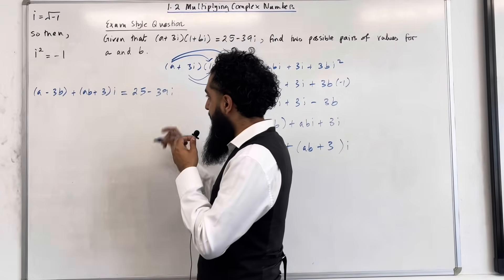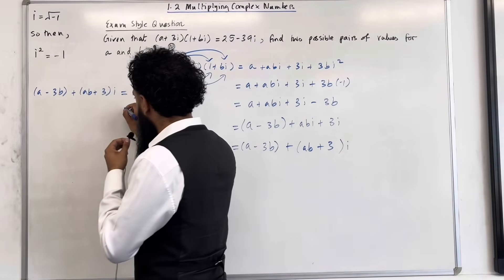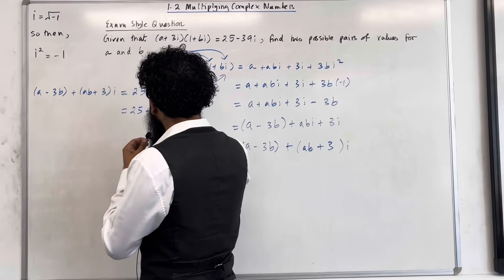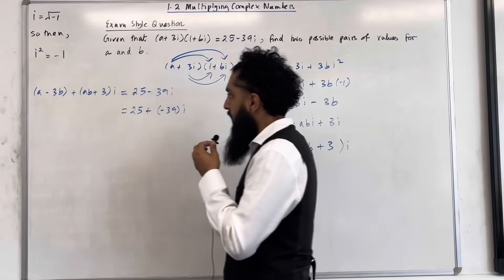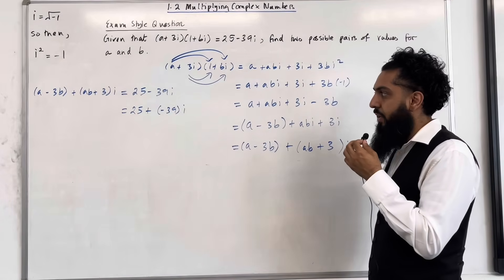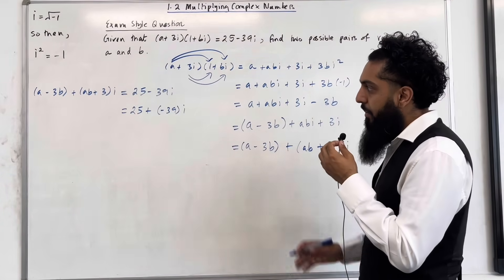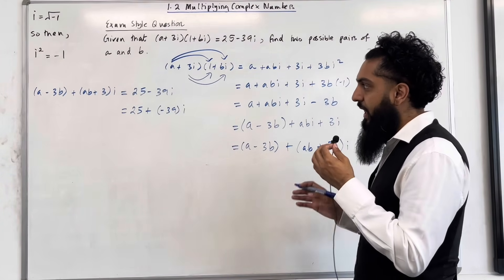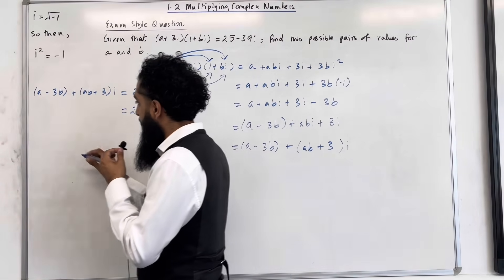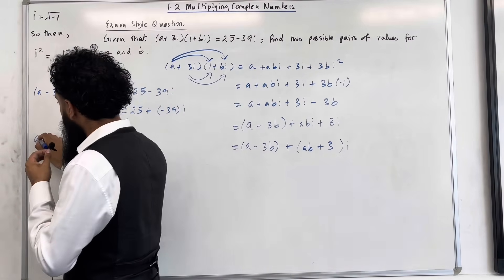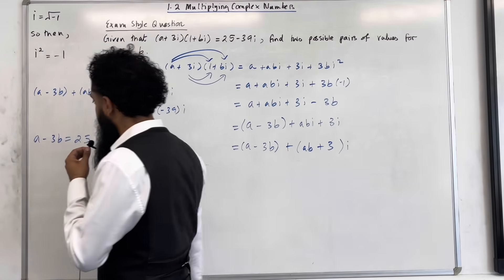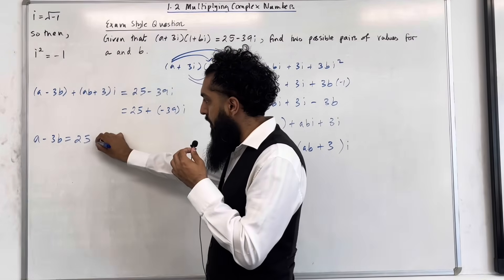That 25 minus 39i, you can rewrite it as 25 plus (minus 39)i. I'm going to be comparing the real terms and the imaginary terms. Comparing the real terms, I can see that a minus 3b has to equal 25. So a minus 3b equals 25 — equation number 1.